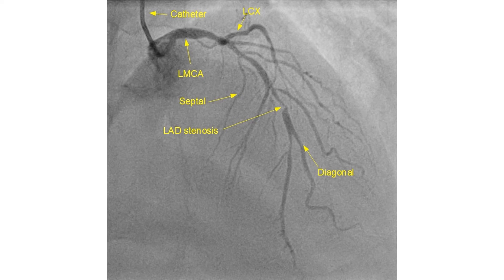The transradial catheter used in this case was a Tiger catheter. The same Tiger catheter can be used for both right and left coronary angiography, thus avoiding a catheter exchange and the potential risk of radial artery spasm.